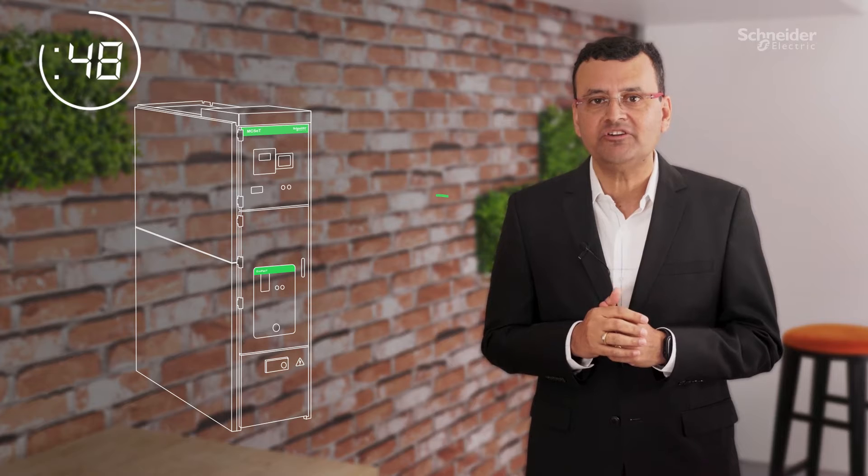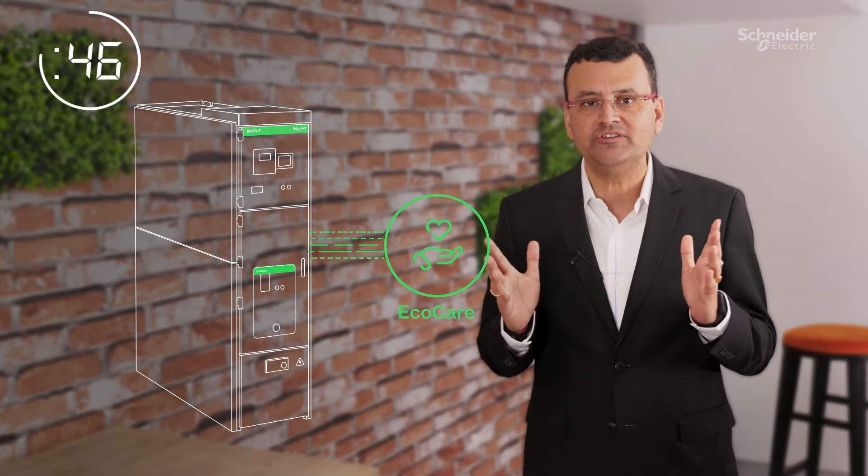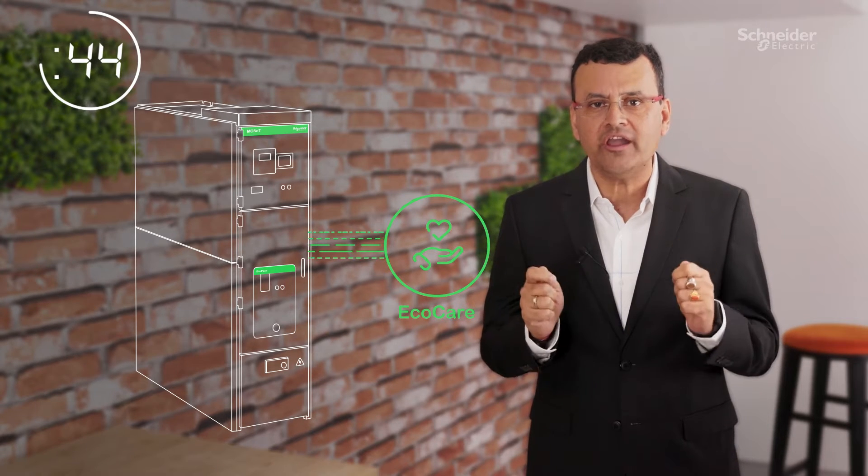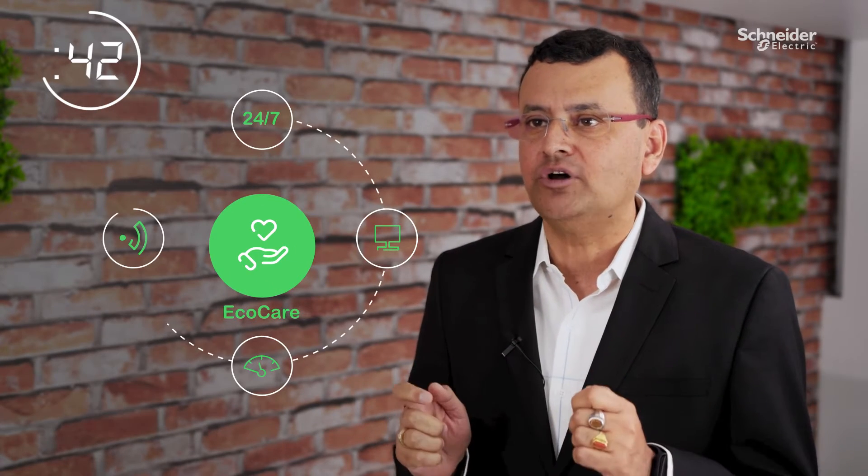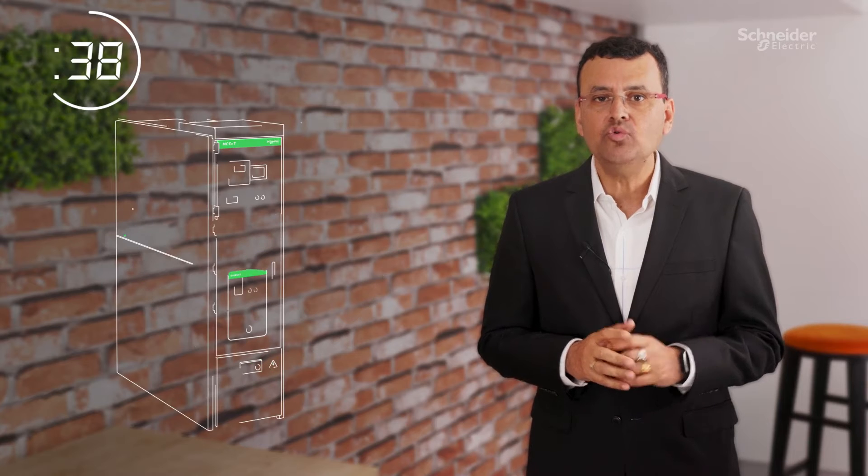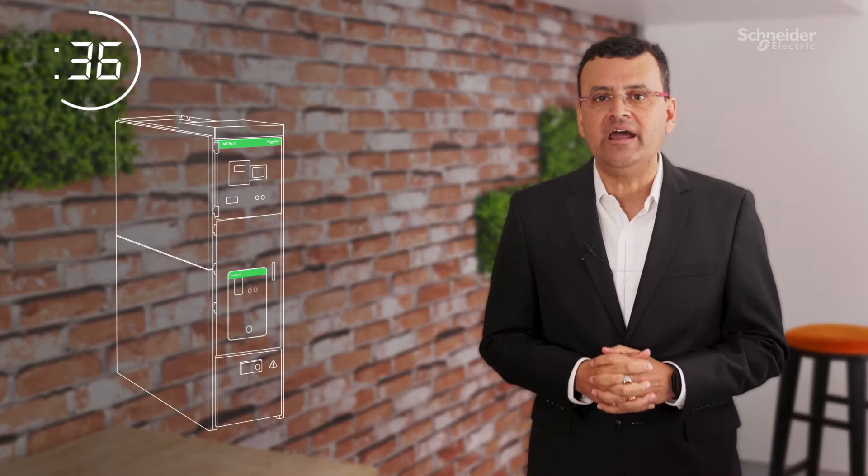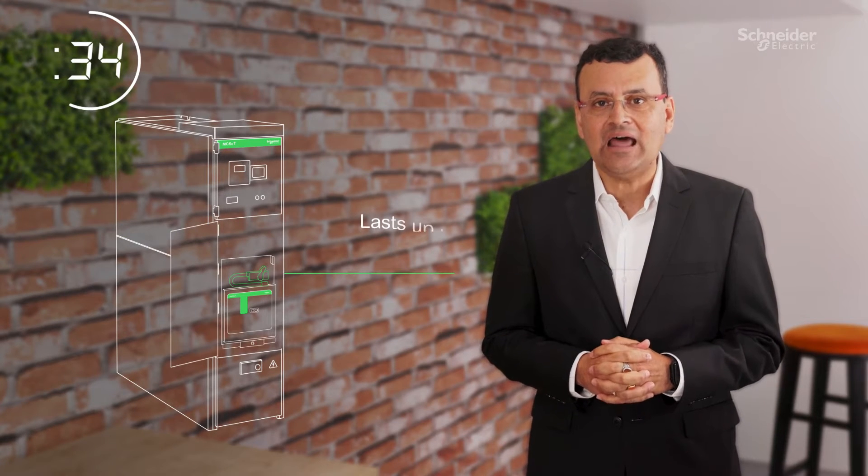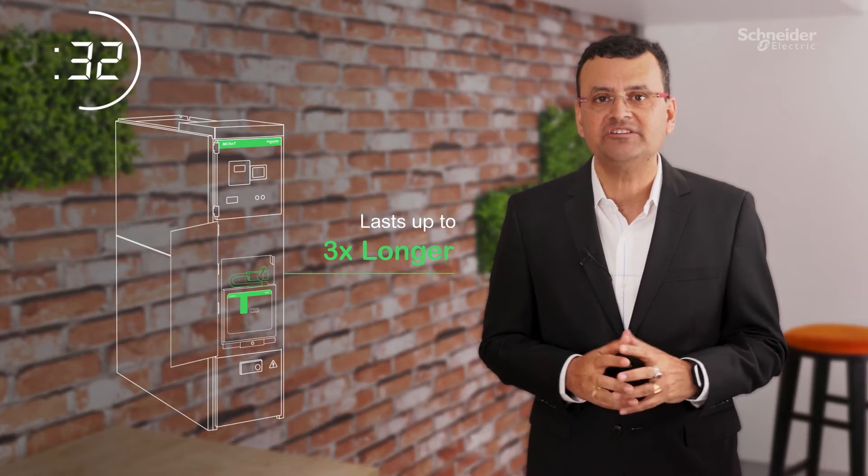MCSETH is a new generation of digitally native 24kV switchgear that uses EchoCare membership to provide 24x7 condition monitoring and maintenance recommendations. Powered by a new high-performance digital circuit breaker, EvoPACT-HVX, that lasts up to three times longer than previous generations.